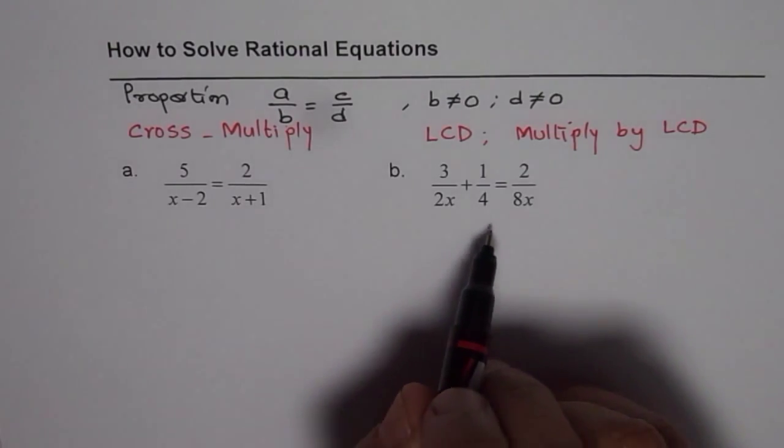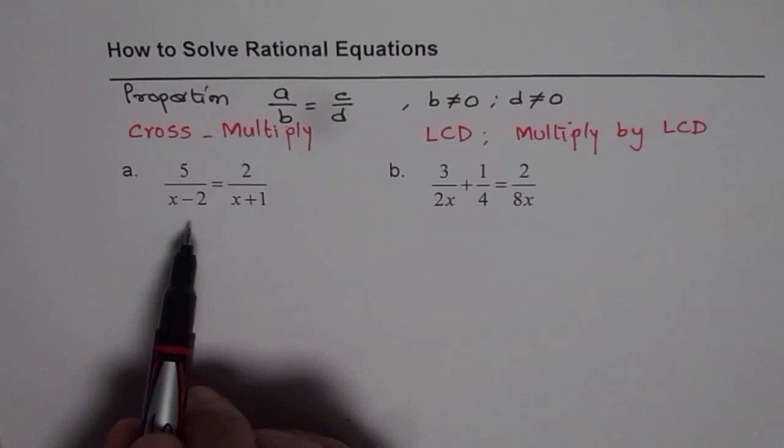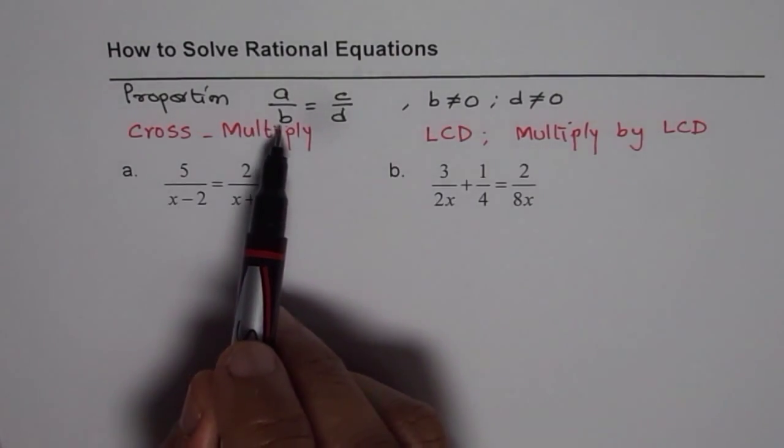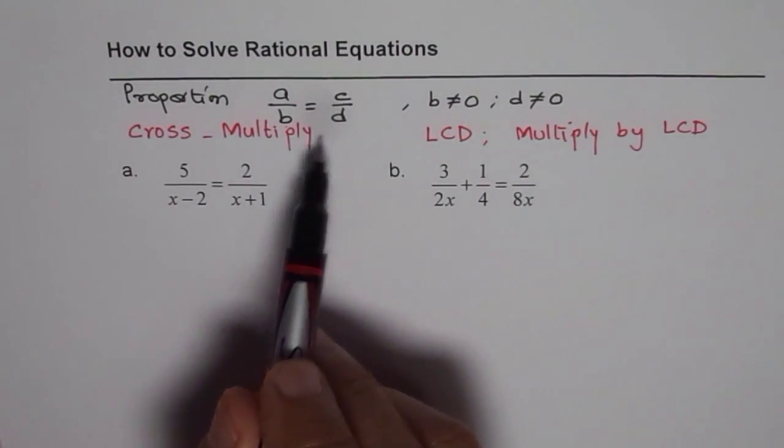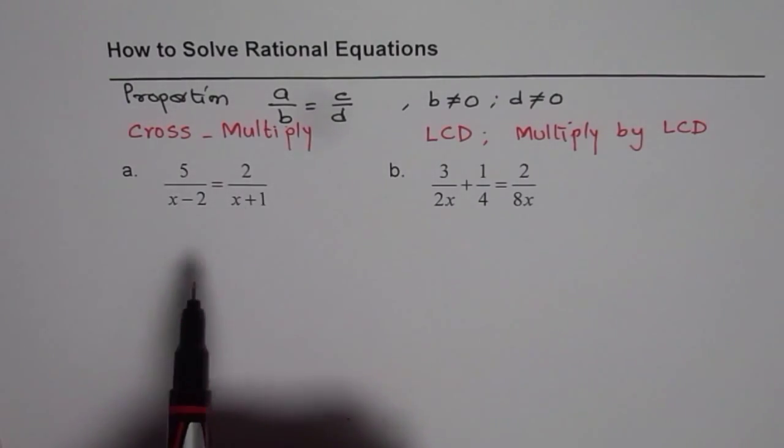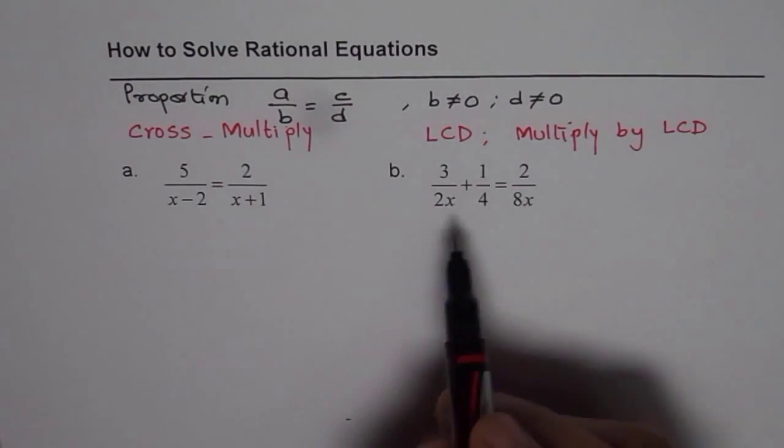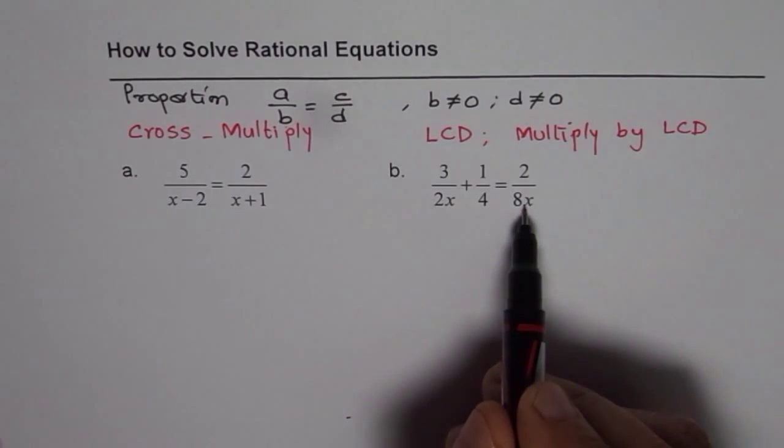So that is the basic rule. If you see that the rational equation is of the form of a proportion, A over B equals to C over D, then you can cross multiply and solve. If not, then find the lowest common denominator and solve.